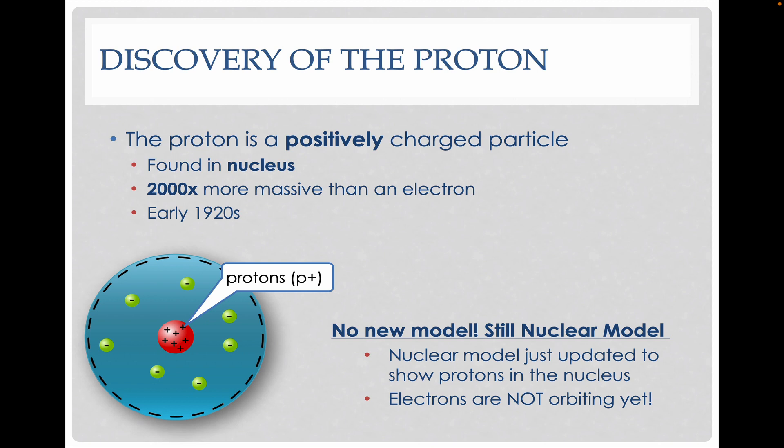After that, we were able to discover the proton, and when the proton was discovered we just modified the nuclear model. We didn't make a new one to include the protons inside the nucleus. We also realized that those protons are 2,000 times more massive than the electron itself, so there are way more mass inside that nucleus but not in those electrons on the electron cloud.